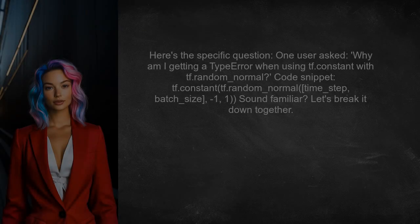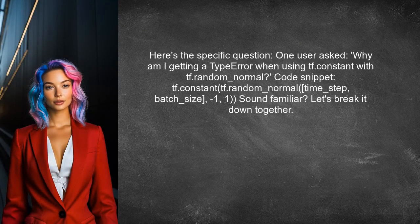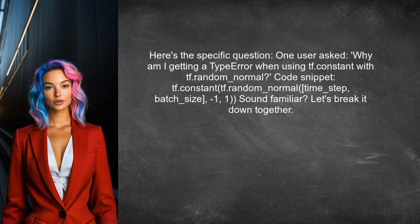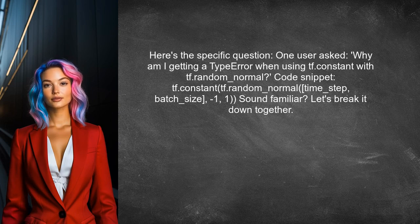Let's dive into the specific question at hand. One user recently asked: why am I getting a type error when using tf.constant with tf.random.normal? They provided this code snippet: tf.constant(tf.random.normal([time_step, batch_size, n_input], 1, 1)). Sound familiar? If so, let's break it down together.